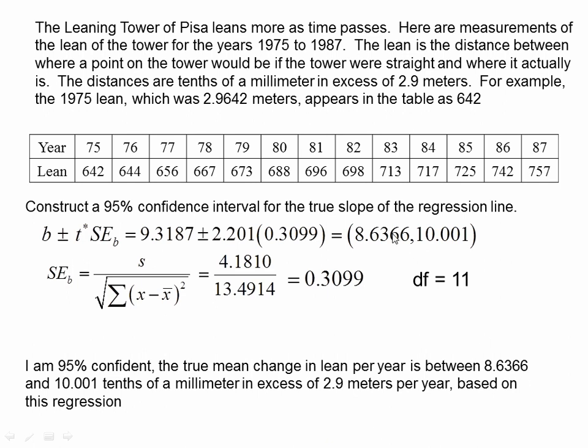is between our lower bound, 8.6366 and our upper bound, 10.001 tenths of a millimeter. Remember, I said that earlier. Got to be careful. It's our unit in excess at 2.9. Remember, we talked about that in part one per year based on this regression.